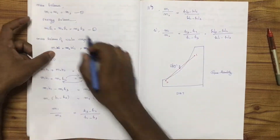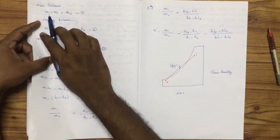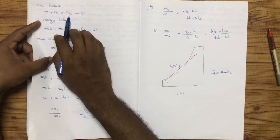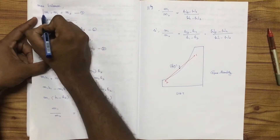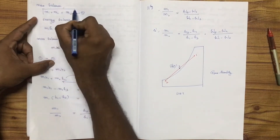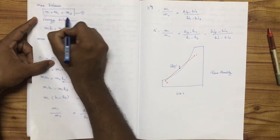The mass balance equation is: M1 plus M2 is equal to M3. This is the mass balance equation for mixing two airstreams.